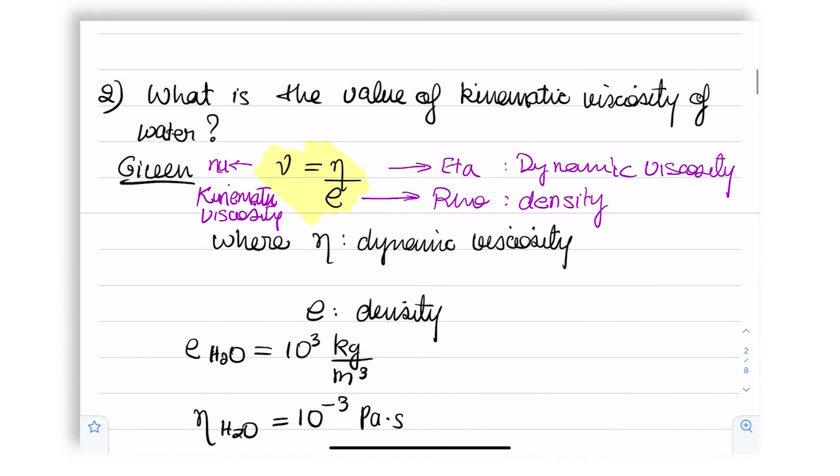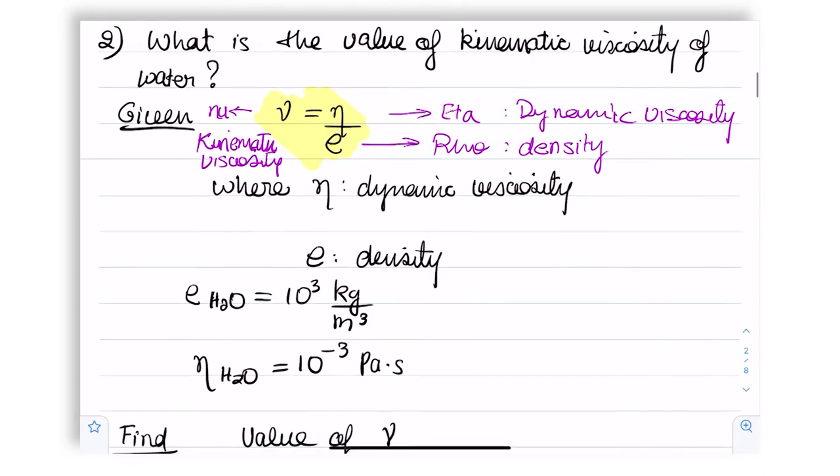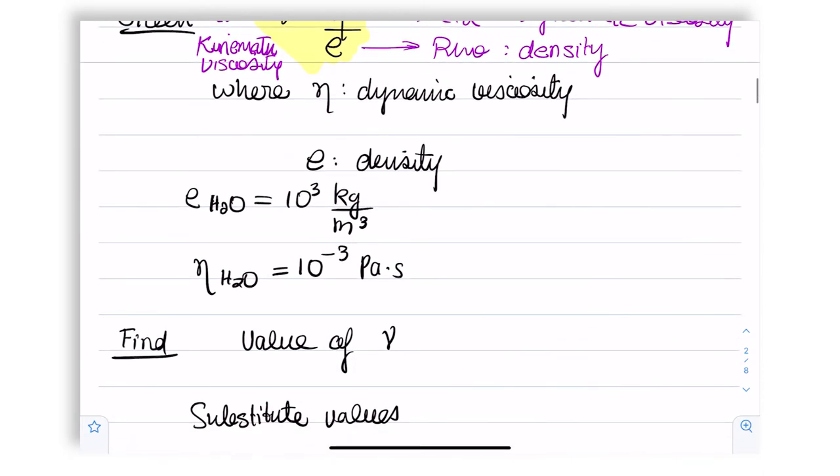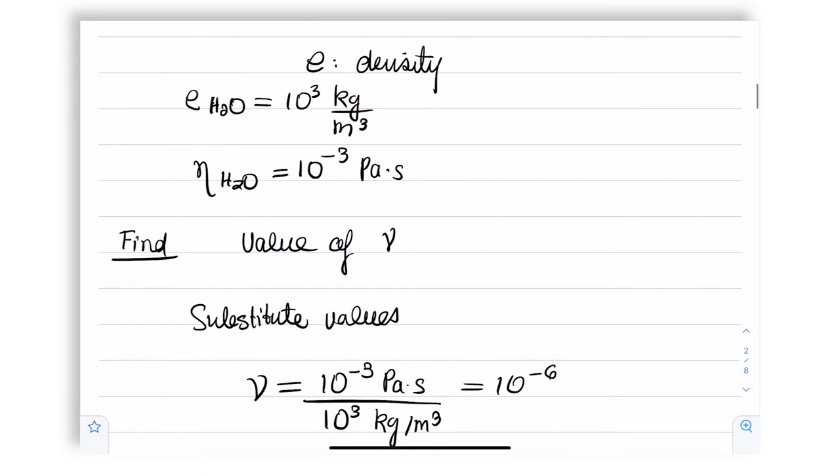The viscosity of water, as we saw right now, the dynamic viscosity, is 10 to the power minus 3 Pascal second. Just keep this in mind. Now we're basically talking eta by rho, which means 10 to the power minus 3 upon 10 to the power 3. If we substitute the values, we end up with 10 to the power minus 6.